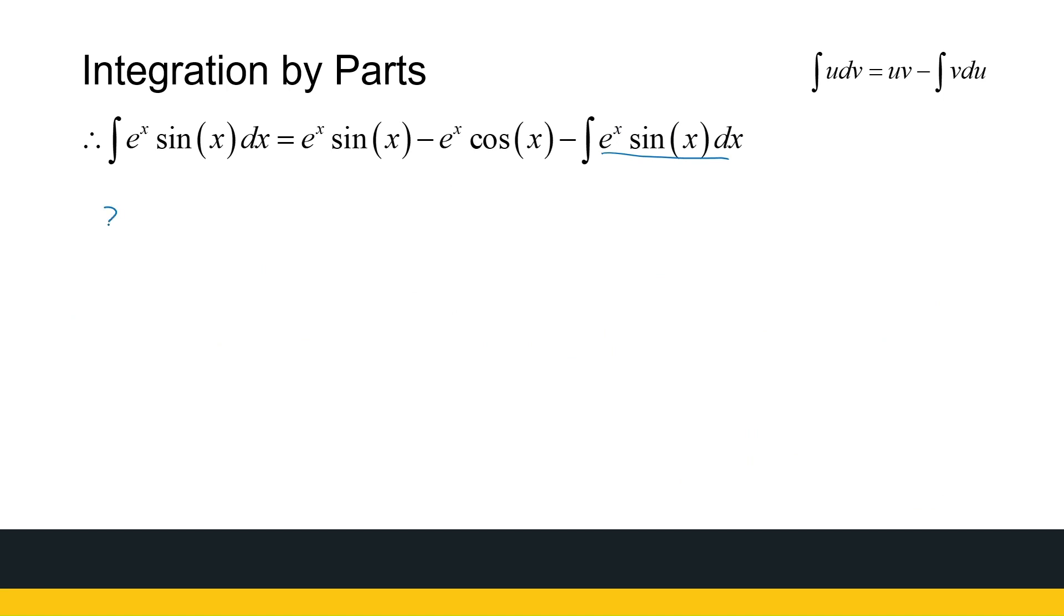2 times the integral of e to the power x sine x dx is then e to the power x sine x minus e to the power x cos x. You can take e to the power x out as a common factor. It doesn't make a difference. So if I want one of them, then the integral of e to the power x sine x dx is then going to be a half. And I'll take e to the power x out. Like I said, it doesn't make a difference.